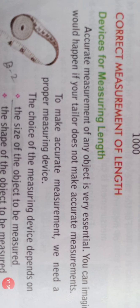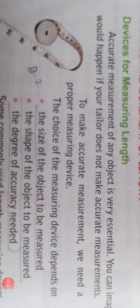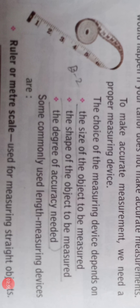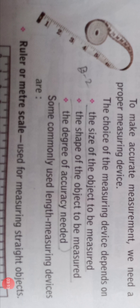The next topic is correct measurement of length. How would you measure the correct measurement? To make accurate measurement, we need a proper measuring device. The accuracy of measurement depends on using a proper measuring device. The choice of measuring device depends on: the size of the object to be measured, the shape of the object to be measured, and the degree of accuracy needed. These 3 points determine the choice of measuring device.